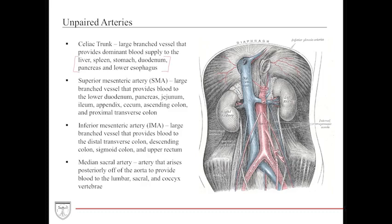The SMA is another very large structure. It provides blood to a portion of the lower duodenum and pancreas, but also all the blood to the jejunum, all the blood to the ileum, and all the blood to the ascending colon and cecum appendix region.